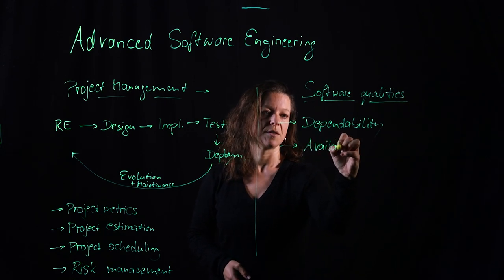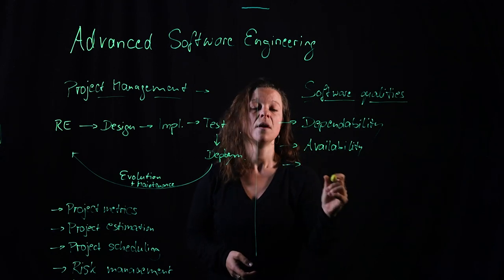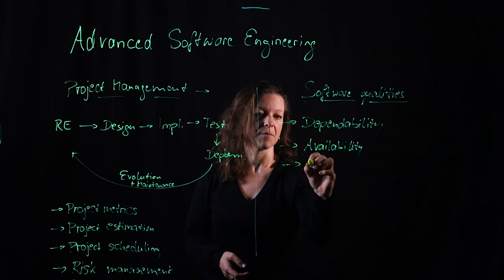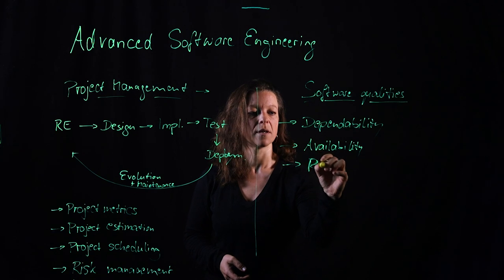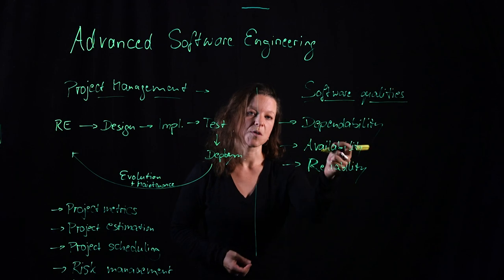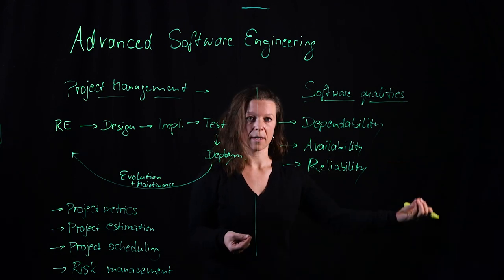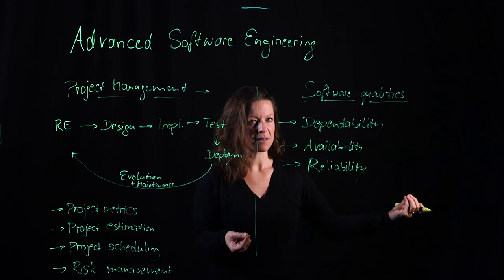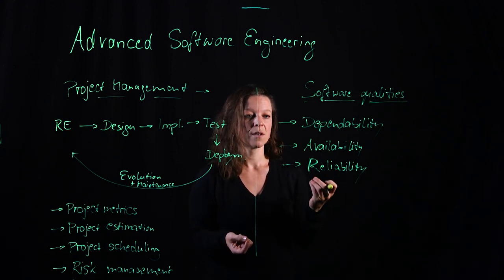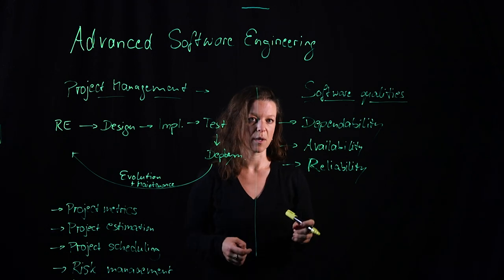First one is availability. If the software system is down, not much we can do. Next one is reliability. So when we work with a software system and it receives a specific input and then it calculates something for us and we get an output back, we would expect that we get the same return for similar inputs every single time. That's part of what reliability means.